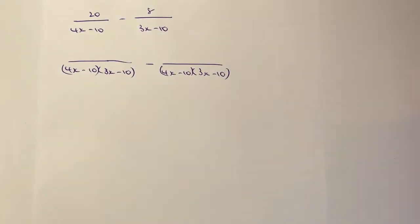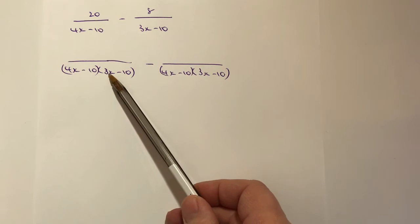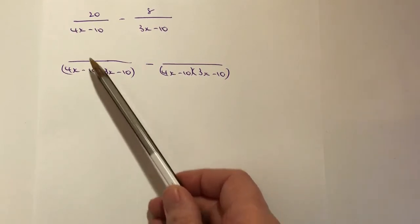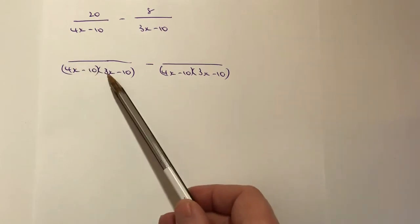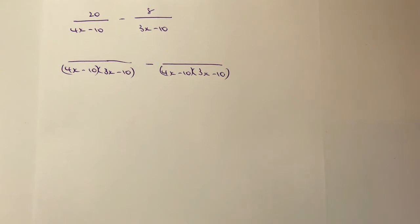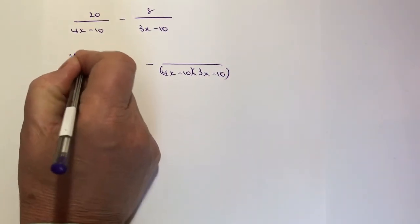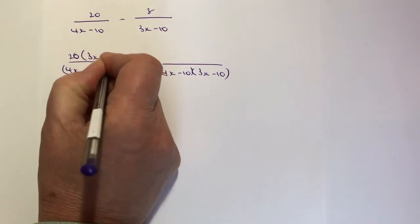Now the top I need to look at to say that if I've got a bottom denominator of these two terms multiplied together, then I need to make sure that whatever I've done to this denominator, in other words I've multiplied it by 3x minus 10, I need to do to the top numerator. So I'm going to write that as 20 times 3x minus 10.